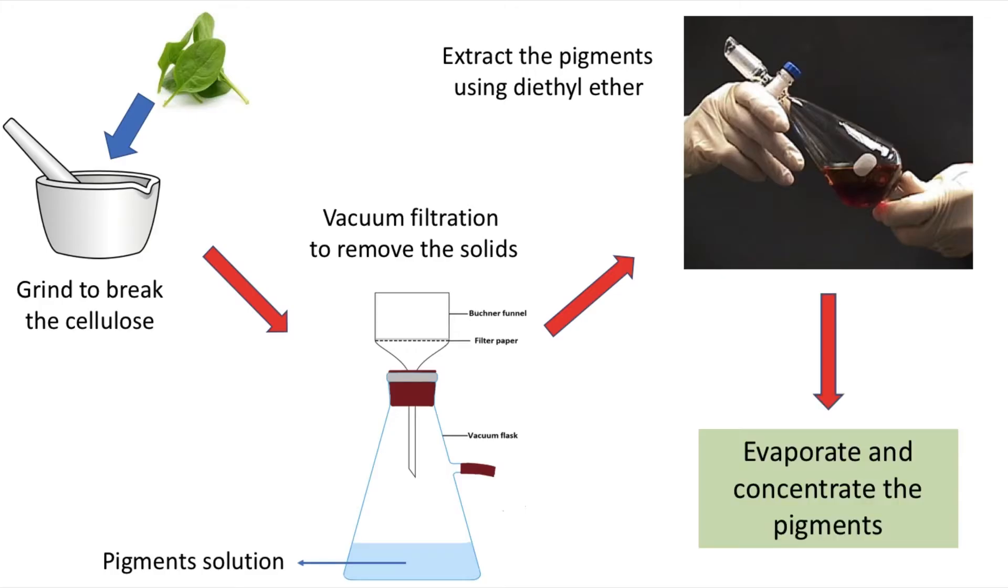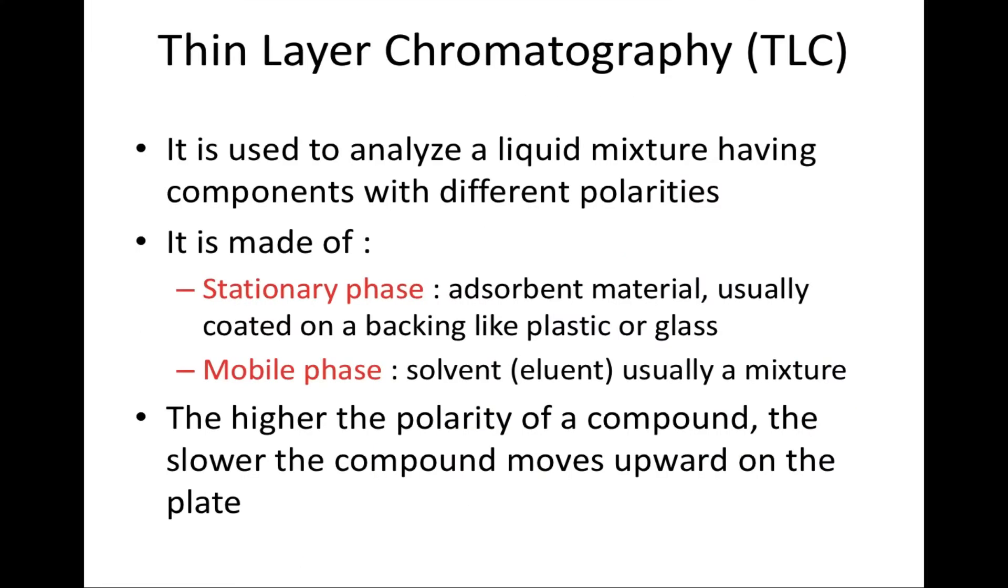To purify the pigments, the crude pigments are later extracted using macroscale extraction with diethyl ether. The pigments are finally transferred into the organic layer. The organic layer is evaporated and concentrated spinach pigments are obtained.